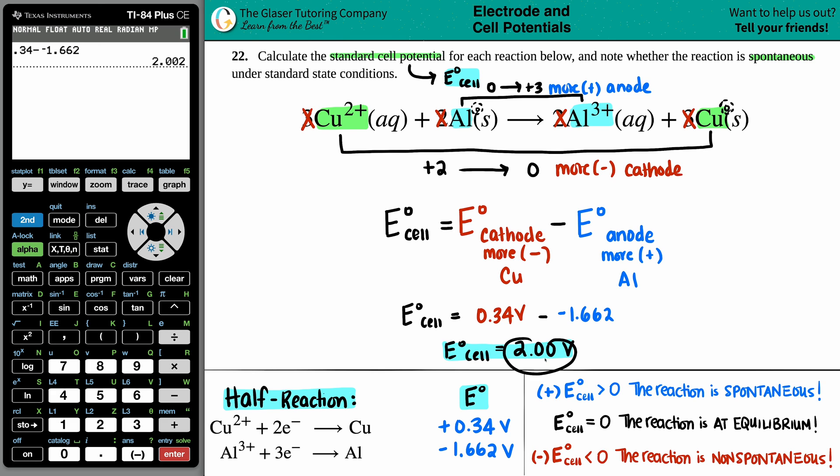But here, 2 is clearly a positive value. So this reaction is spontaneous. It's going to run without the use of any additional energy. And that is it.